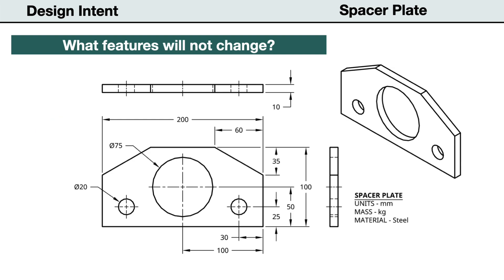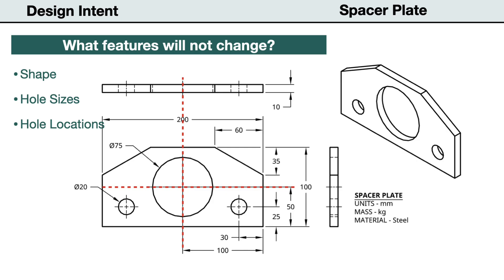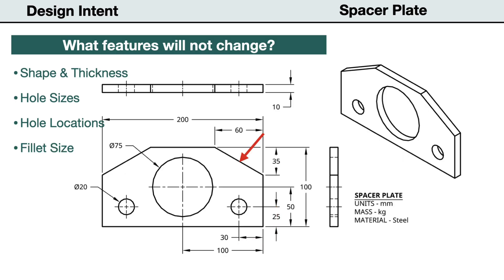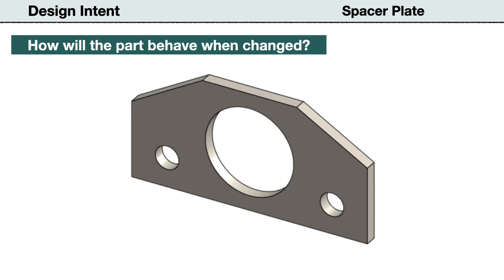Next, we need to identify the features that should remain unchanged when the variables are updated. In this case, the general shape should be maintained. The size of the large hole and size of the small holes should remain the same. The large hole should remain centered on the part. The small holes should remain in the same locations relative to the outside edges. Size and location of the filleted edges should remain the same relative to the top corners. The left and right symmetry of the part should be maintained when revisions are applied. When creating the model, the choice and order of placing constraints will determine if the model will change predictively.